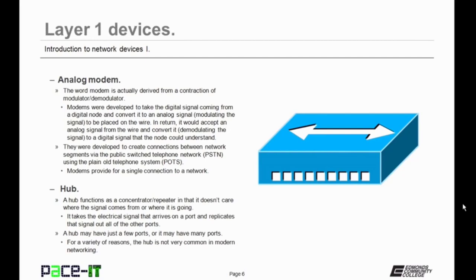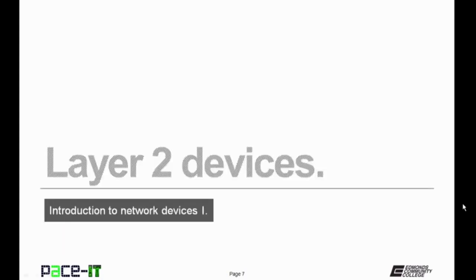Then there's the hub. A hub functions as a concentrator or repeater, in that it doesn't care where the signal comes from or where the signal is going — kind of like the modem. It takes an electrical signal that arrives on a port and replicates that signal out all of its other ports. A hub may have just a few ports or it may have many ports, and for a variety of reasons, the hub is not very common anymore in the modern network.